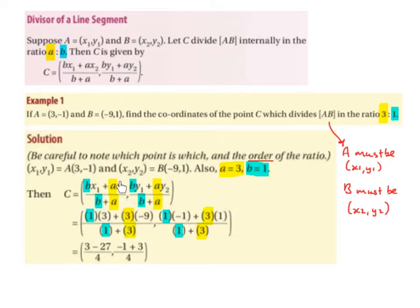Multiplied by x2, which is -9. So we have 3 multiplied by -9, and that's all divided by b plus a, which is going to be 1 plus 3. Then we bring down the comma.